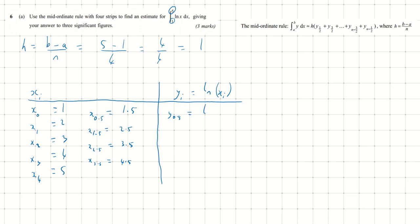y0.5 is ln(x0.5), which is ln(1.5) = 0.4055. The question asks for the final answer to three significant figures, so I'm using at least four significant figures for my y values. y1.5 is ln(x1.5), which is ln(2.5) = 0.9163.